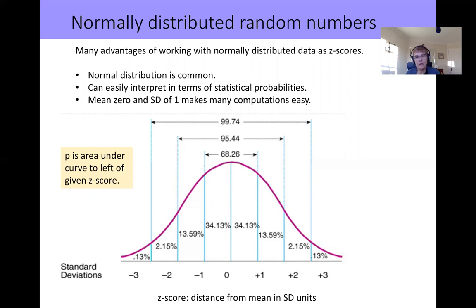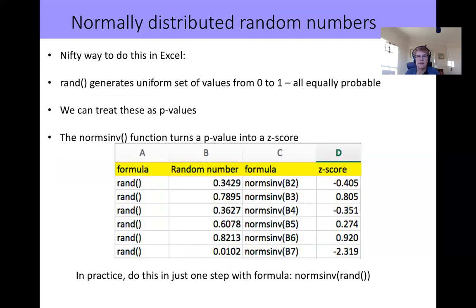And we know from the normal distribution that the proportion of values that you would have for normally distributed data with particular values of Z scores. So the further away from the mean you get the rarer it is to find that type of score. And the probability is the area under the curve to the left of the given Z score. So there's a really direct conversion if you've got normally distributed data from the Z score to the P value, the probability that that value will have been observed.